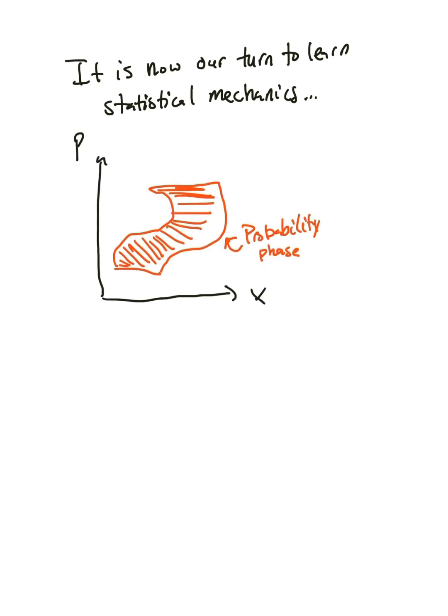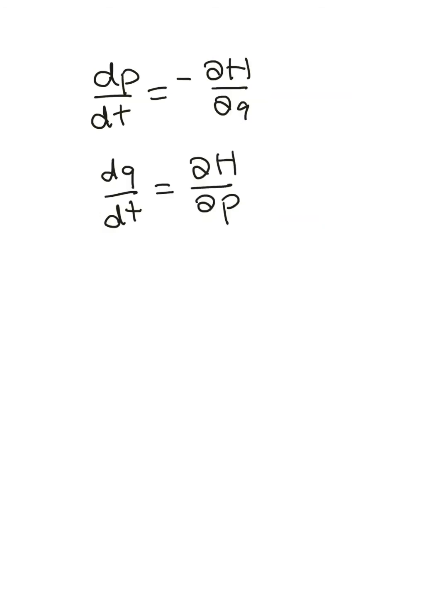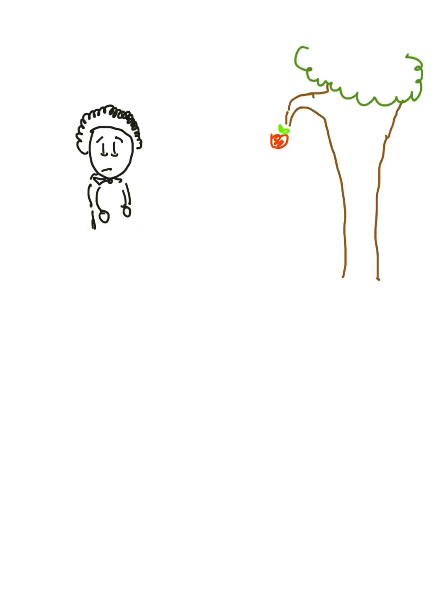In Hamiltonian mechanics, we solve the Hamilton equations to find the phase space flow. Let's see how Alexander Hamilton, I mean William Rowan Hamilton, would solve the apple falling problem.